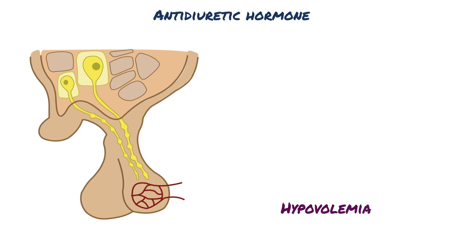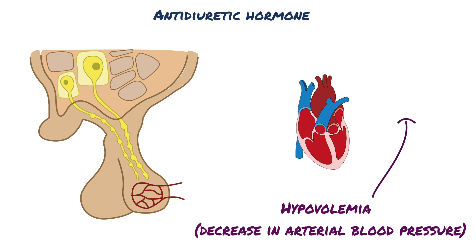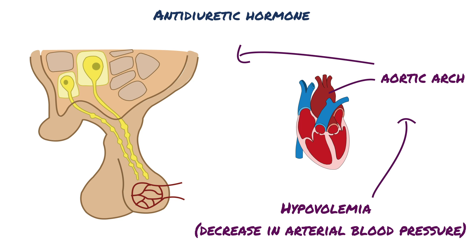Hypovolemia is also a potent stimulus for ADH secretion. Decreases in extracellular fluid volume of 10% or more cause a decrease in arterial blood pressure that is sensed by baroreceptors in the left atrium, carotid artery, and aortic arch. This information about blood pressure is transmitted to the hypothalamus, which directs an increase in ADH secretion.